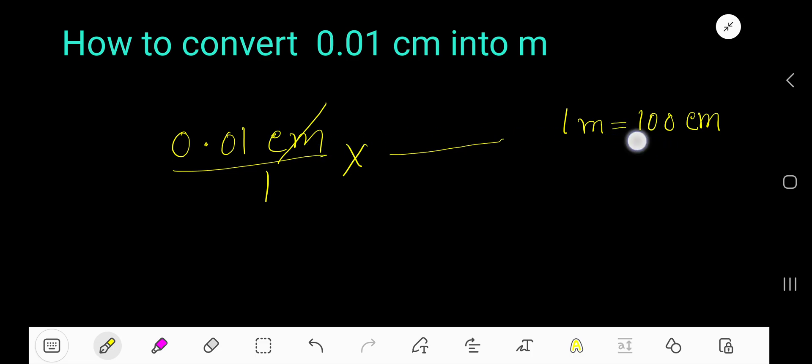From this conversion equation, centimeter part will come at the bottom so that I can cancel this centimeter with this centimeter, and meter part will come at the top. Now multiply top number: 0.01 times 1 means 0.01.